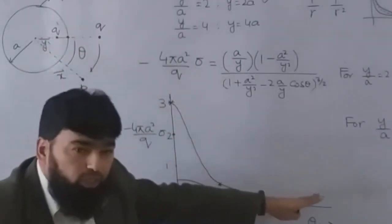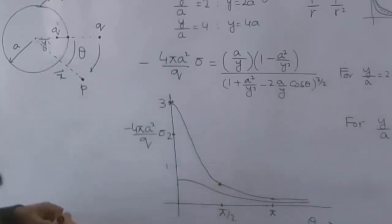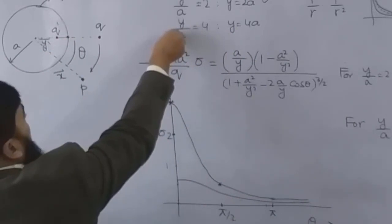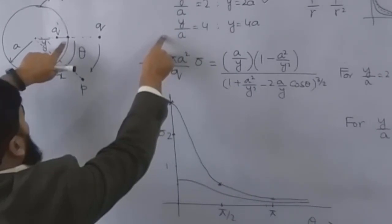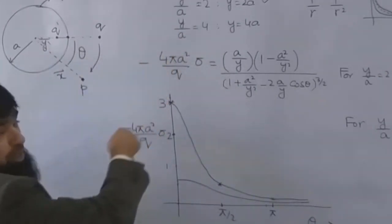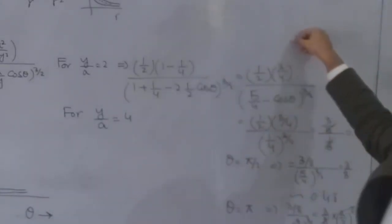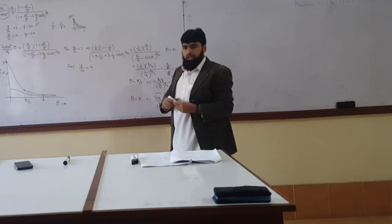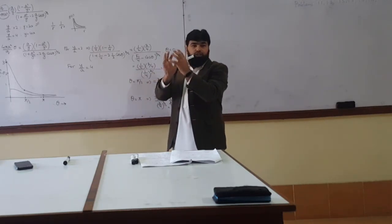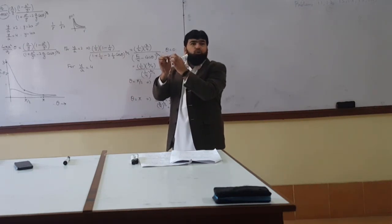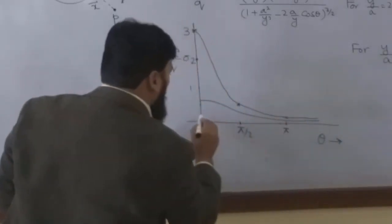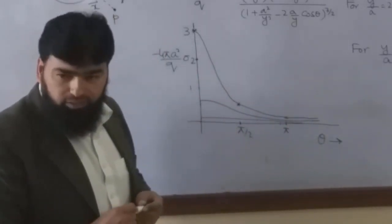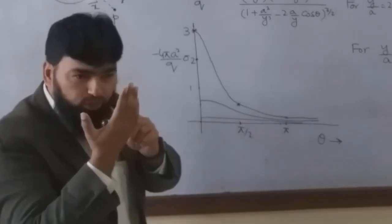That's why your surface charge density is decreasing. When you are at this distance — y over a equals 4 — and when you move here, according to this point the sphere distance is not changing that much. If you will be here at this point, there will be almost slight change in the induced charge because the surface will become a point to you. On that point the charge will be almost everywhere, and for a very far point your induced charge will be almost changing like this.